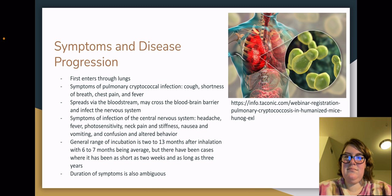Symptoms and Disease Progression: Desiccated yeast first enters the lungs, where in the alveolar spaces they rehydrate. Symptoms of a pulmonary infection include cough, shortness of breath, chest pain, and fever. From there, they spread via the bloodstream and may cross the blood-brain barrier and infect the nervous system. Symptoms of a central nervous system infection include headache, fever, photosensitivity, neck pain and stiffness, nausea and vomiting, and confusion and altered behavior. The general range of incubation is 2 to 13 months after inhalation, with 6 to 7 months being average, but there have been cases as short as 2 weeks and as long as 3 years. The duration of symptoms has, in my research, been rather ambiguous.